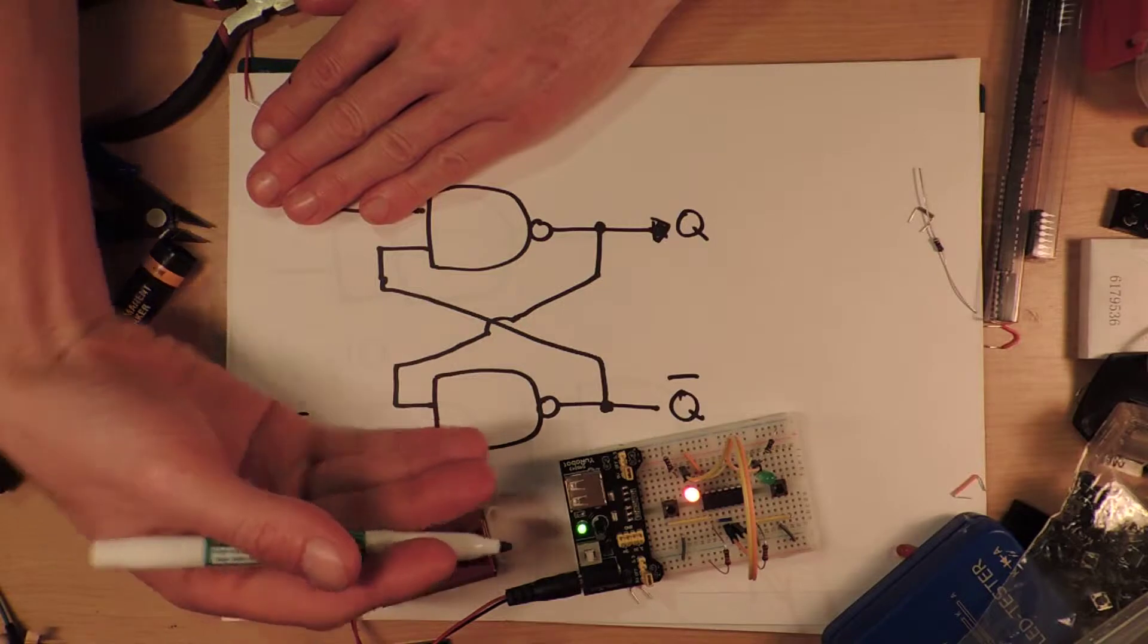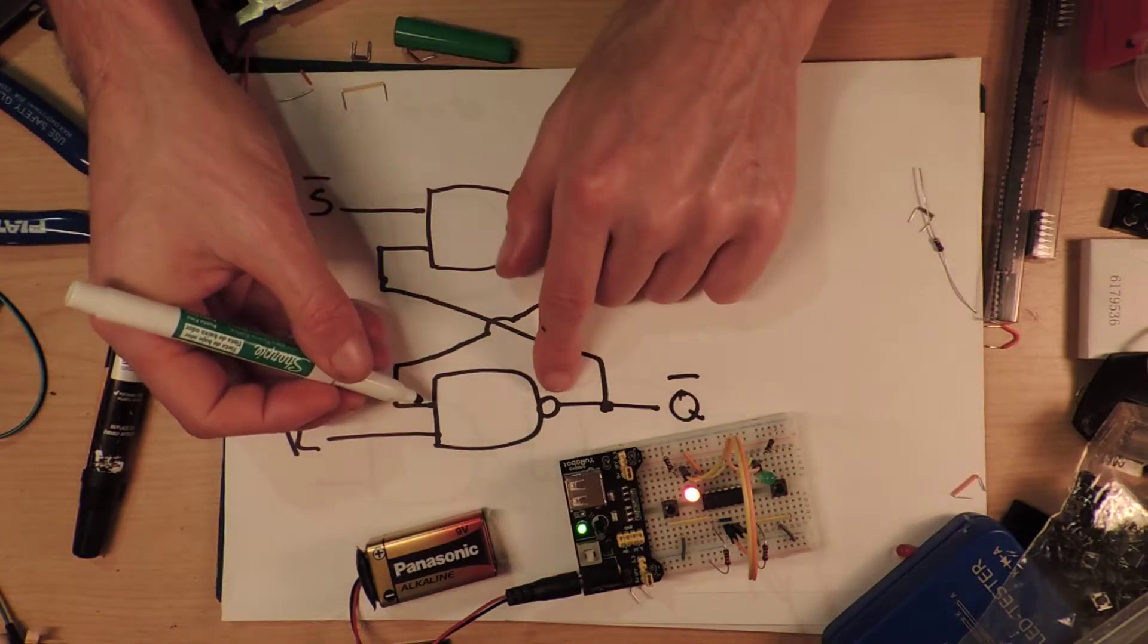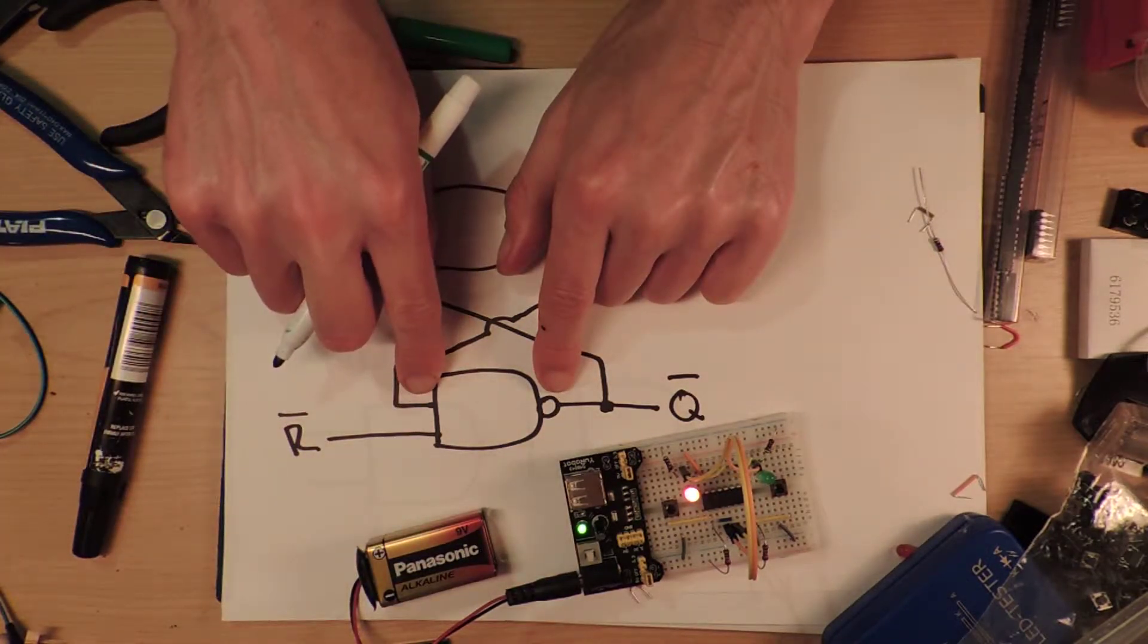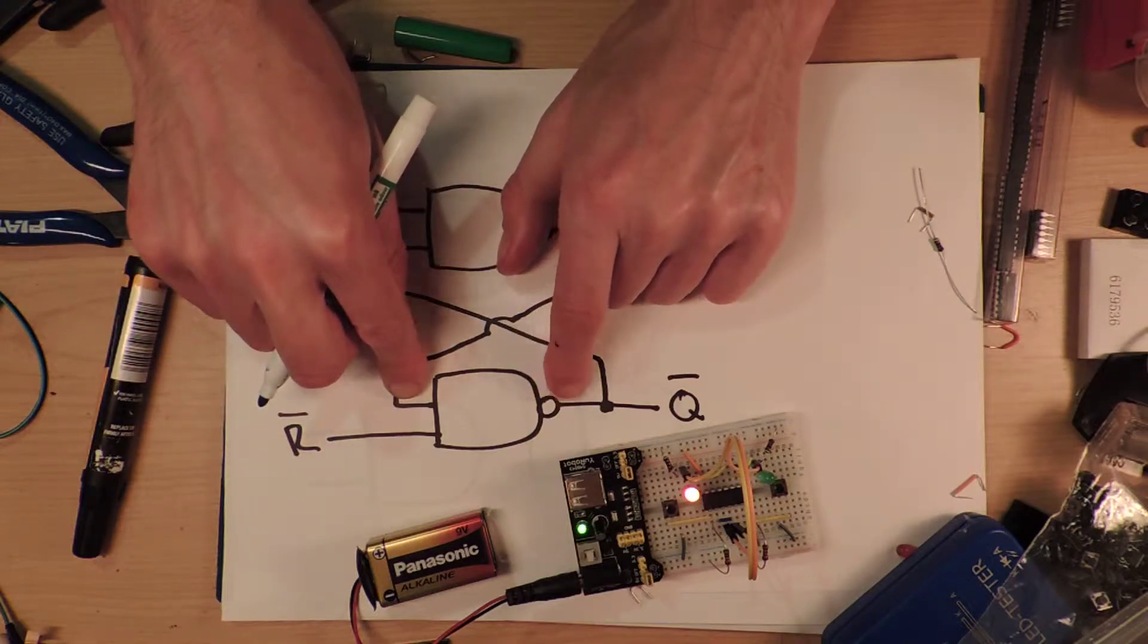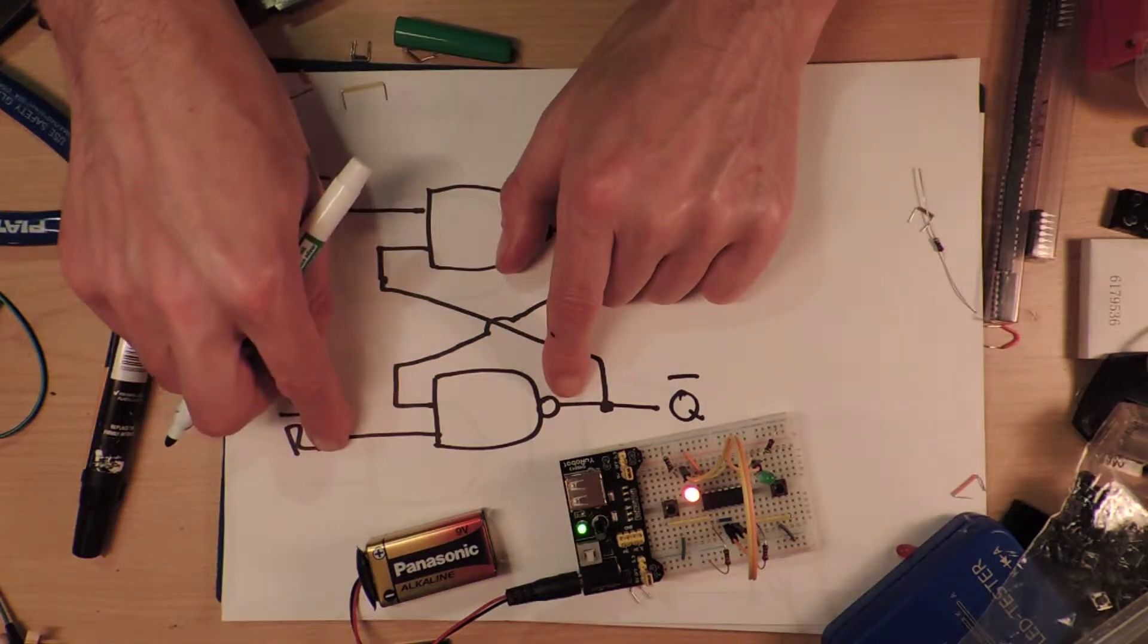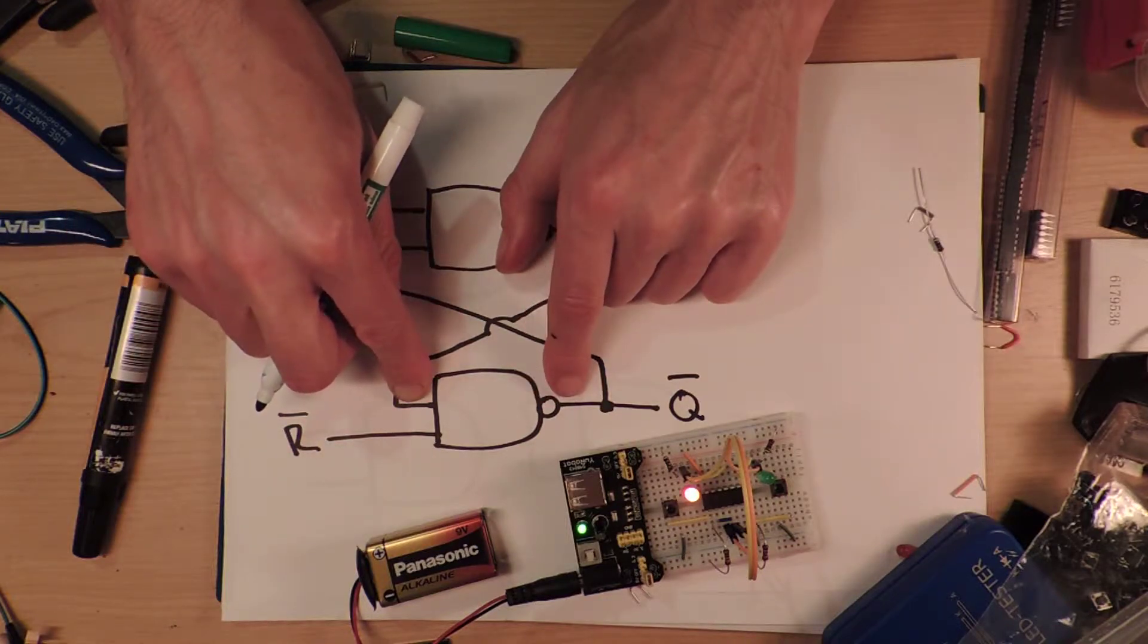So if both of these are high, all that matters, it becomes essentially an inverter. So if you ignore that, the output will be the inverse of whatever this is. So this is high and this is high, the output will be low. And if this is high and this is low, the output will be high.